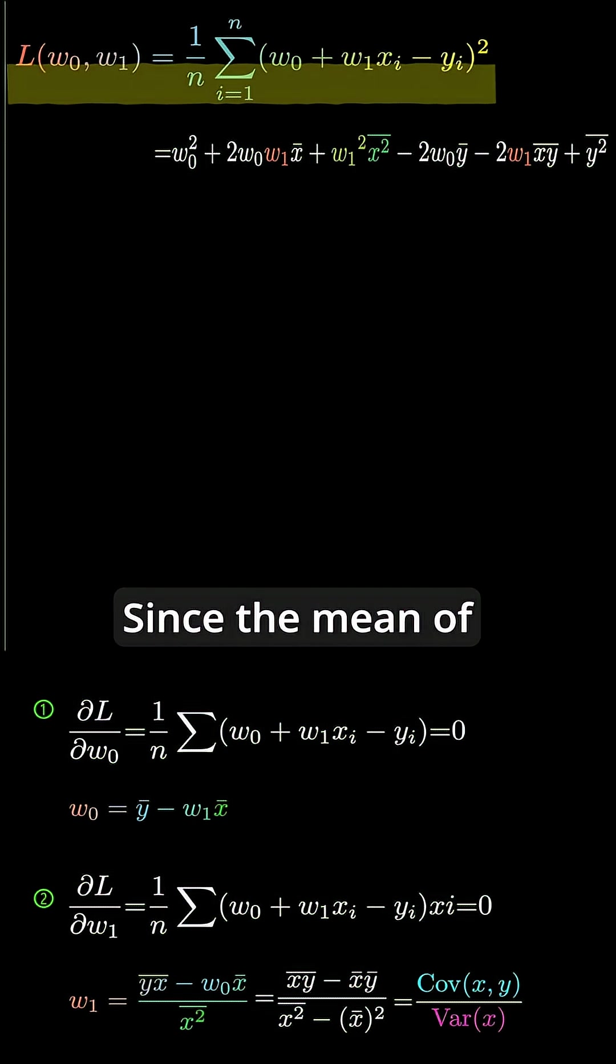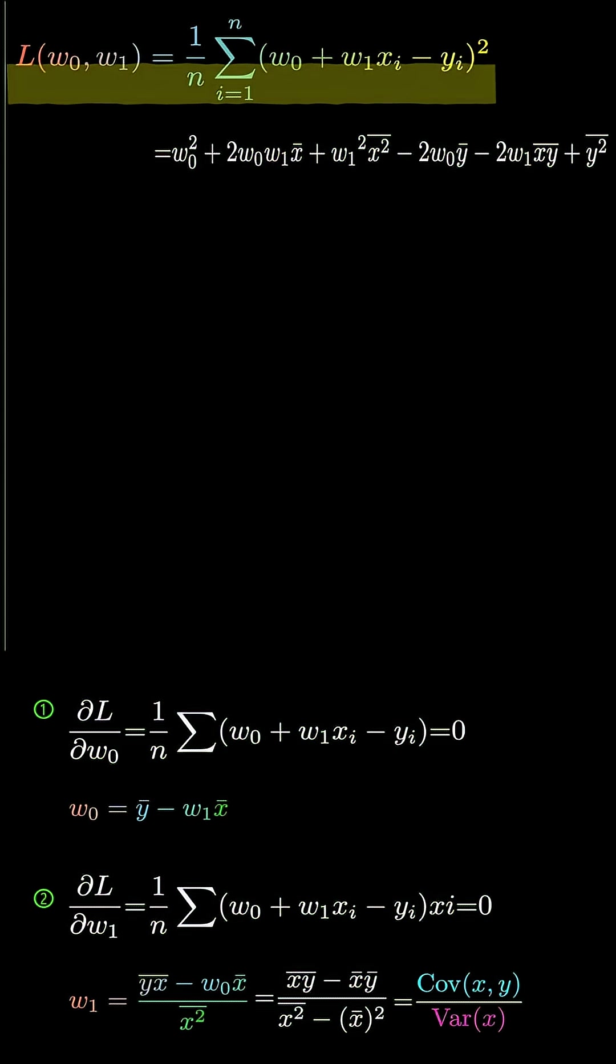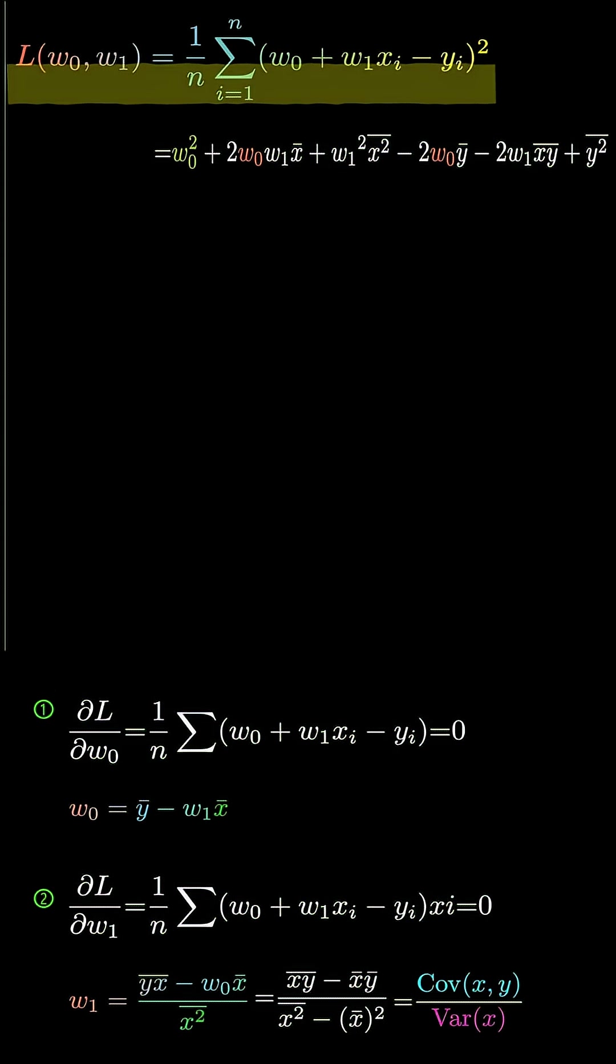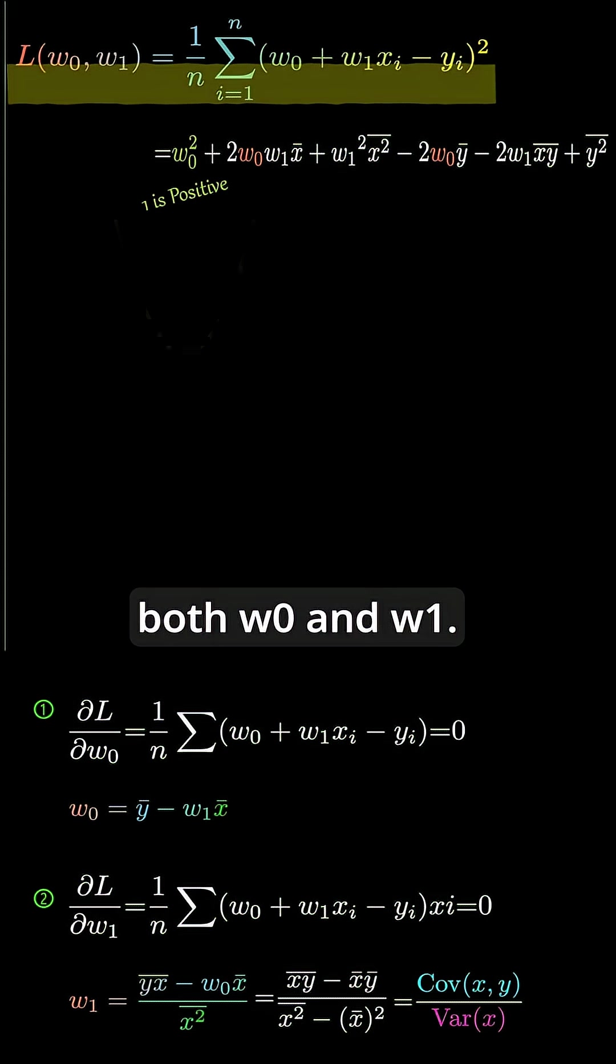Since the mean of squares is positive, the quadratic in w1 opens upward. Similarly, for w0, the coefficient of w0 squared is 1, which is also positive. So, L is convex with respect to both w0 and w1.